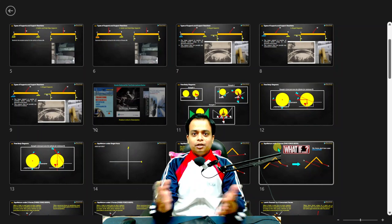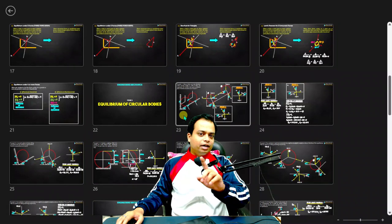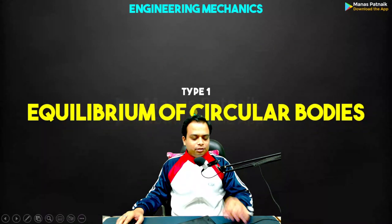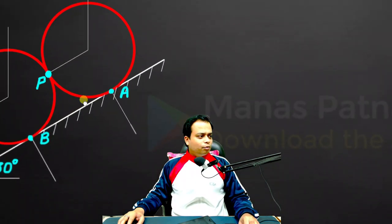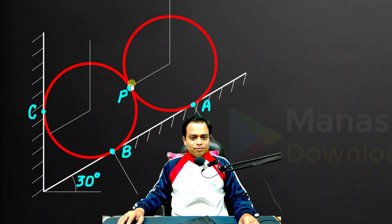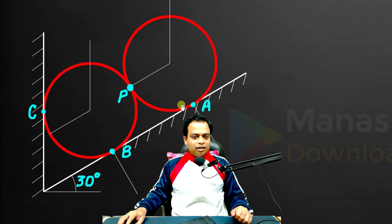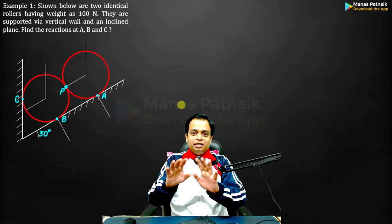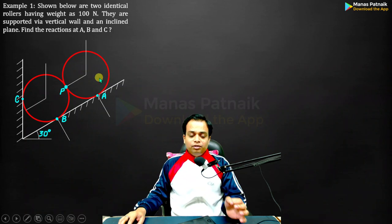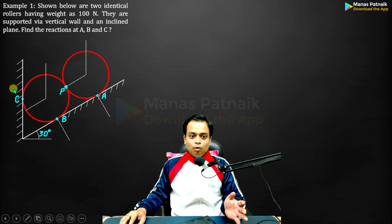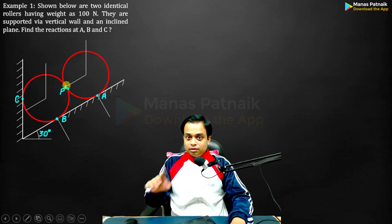Today we're going to kick off by solving some examples based on circular bodies. We'll look at an example with two cylinders in contact with each other, stuck between a vertical wall and an inclined plane. We'll create the entire free body diagrams and find the forces applied on both cylinders due to the inclined plane, vertical wall, and their common point of contact P. This is example number one.